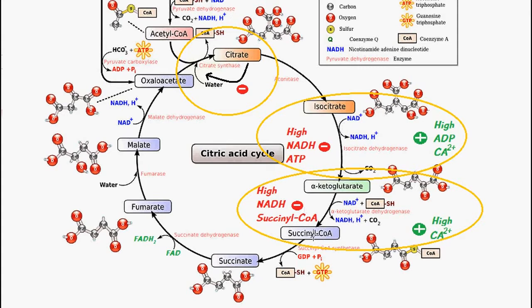Another point to note is in the conversion of isocitrate to alpha-ketoglutarate. If we have high NADH levels or high ATP levels, this will inhibit this reaction. However, if we have high ADP levels and high calcium levels, this will favor the reaction.